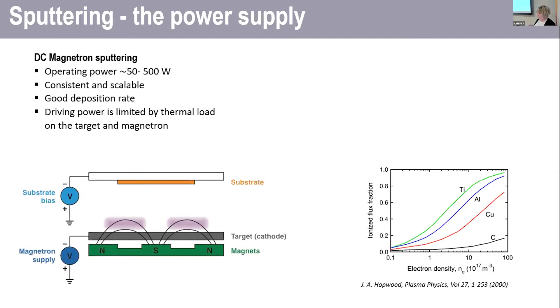Because a dense plasma gives you a high electron density. And as we can see here, this graph on the right hand side, when you increase the electron density, you're increasing the ionization flux fraction.